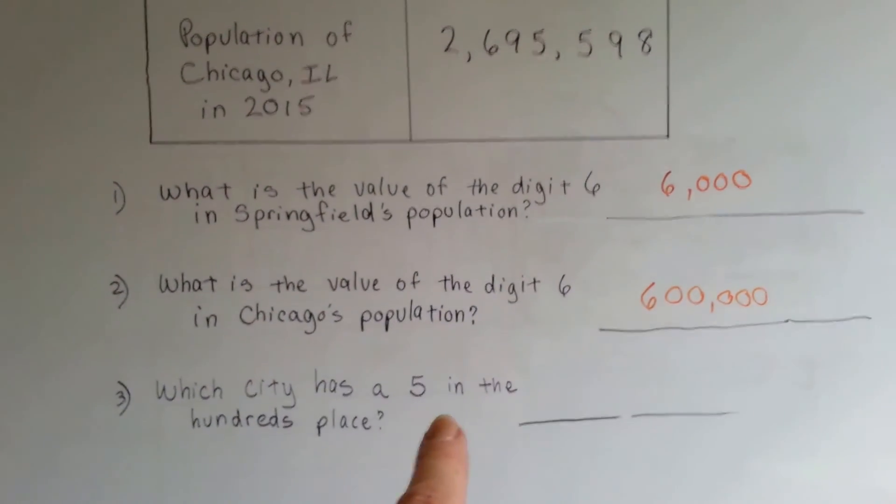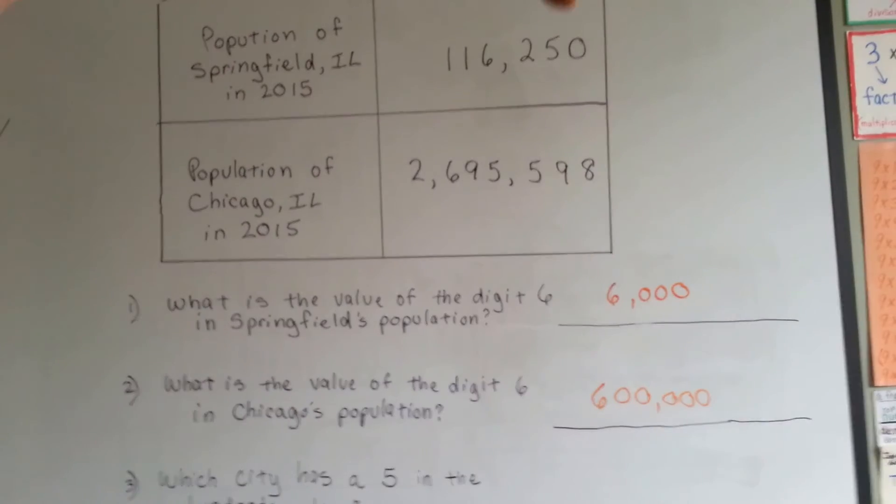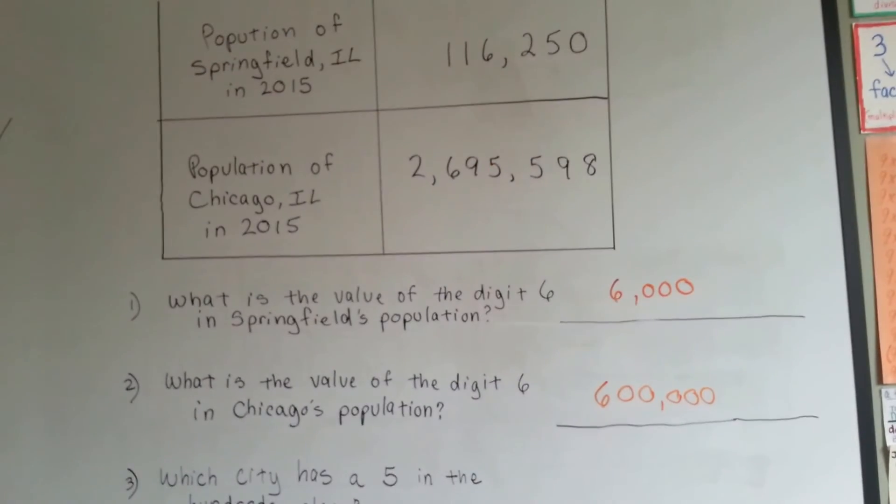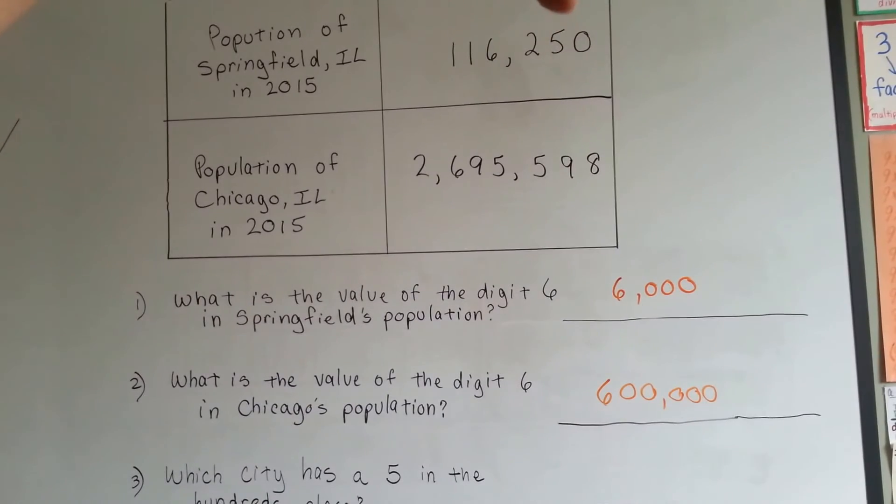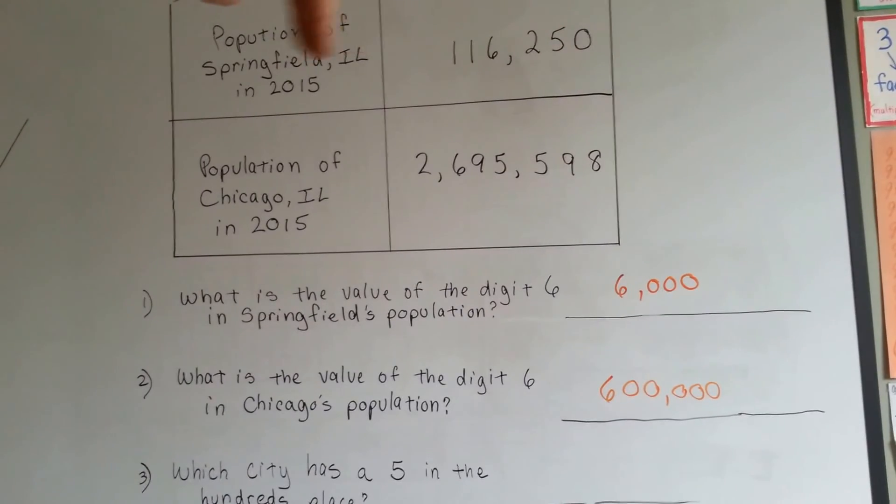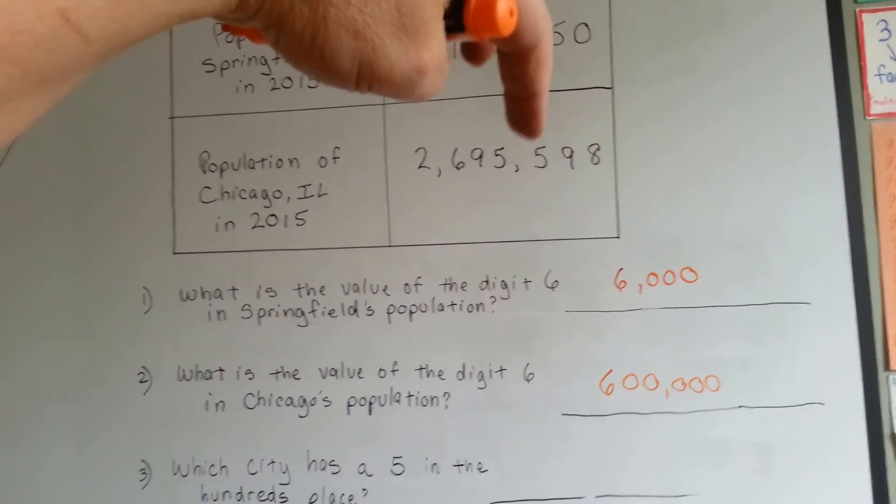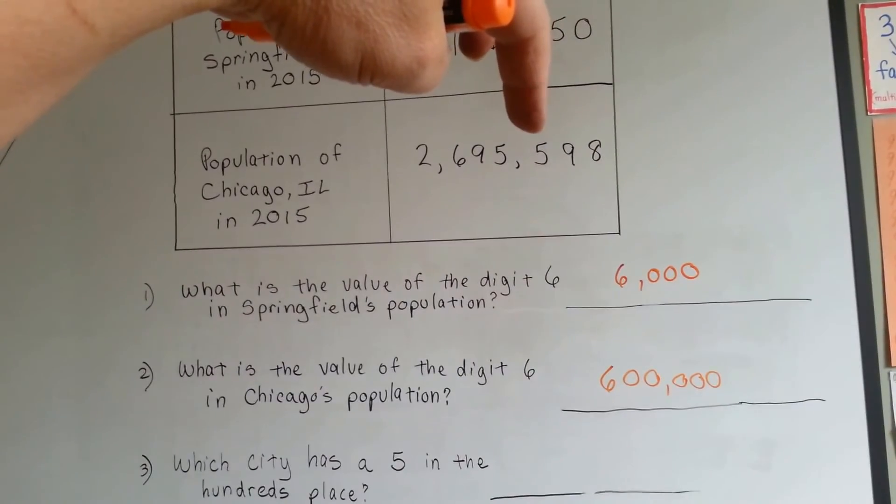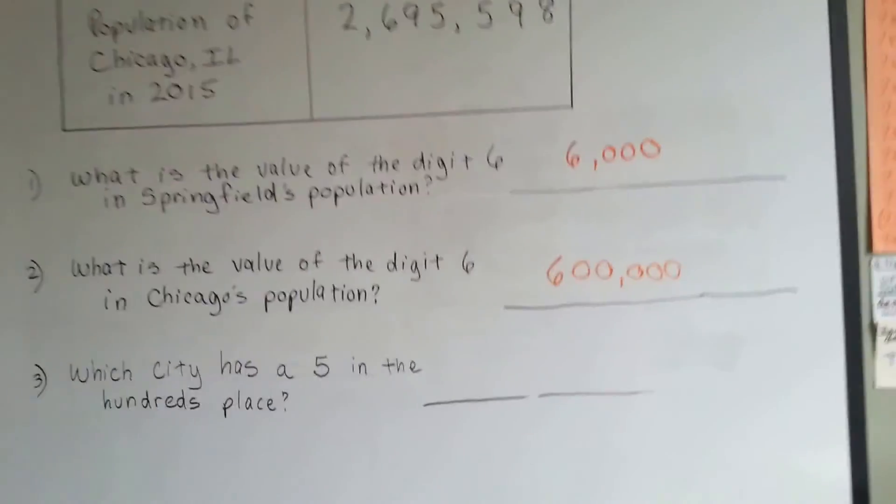Which city has a 5 in the hundreds place? Here's a 5, here's a 5, and here's a 5. Which one has a 5 in the hundreds place? That's ones, and that's tens. So no, it's not Springfield. Ones, tens, hundreds. There's a 5 in the hundreds place for Chicago. There's even a 5 in the thousands place. But if you said Chicago, you're right.